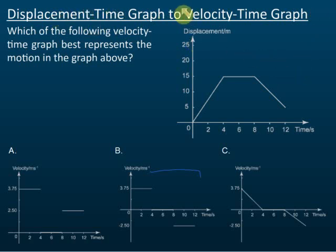Okay, displacement-time graph to velocity-time graph. This one they want us to change from displacement-time graph to velocity-time graph. Which of the following velocity-time graphs best represents the motion in the graph above? If they give you a displacement-time graph and they want you to change this to velocity-time graph...